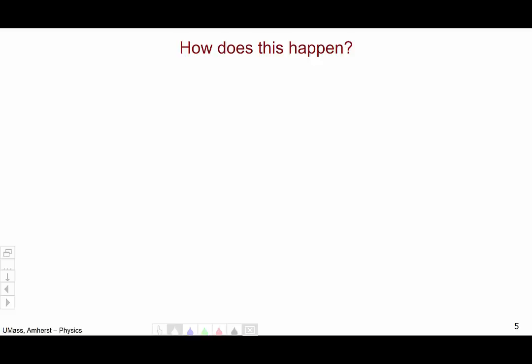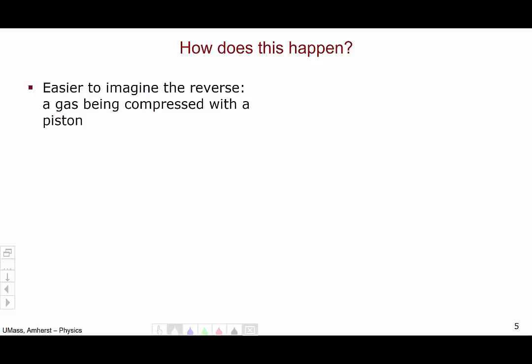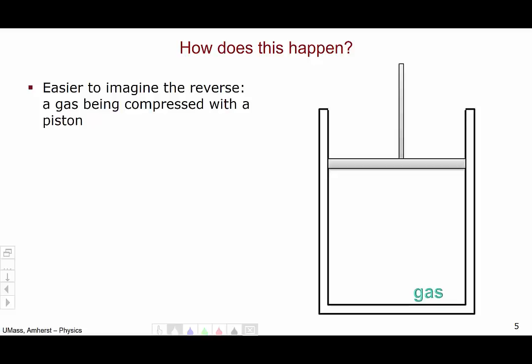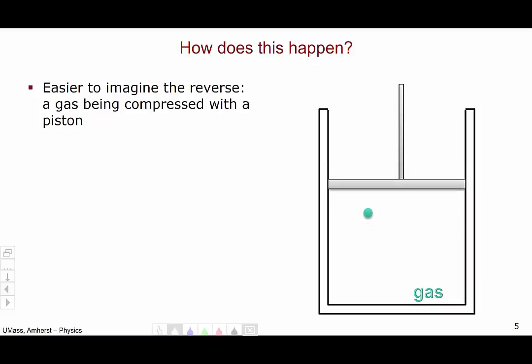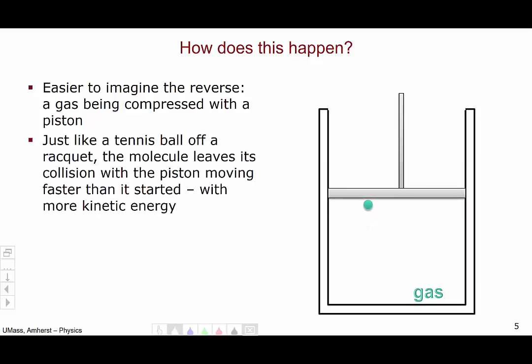How does this really work at a microscopic scale? Instead of thinking about the expansion of a gas, it's easier to visualize this in reverse, where a gas is being compressed with a piston. So here we have a piston filled with some sort of gas. We're going to follow a single molecule of the gas. Our piston is going to go down while this particular gas molecule we are following is traveling straight up. Just like a tennis ball off of a tennis racket, the molecule is going to leave the collision with the piston moving faster than it started.